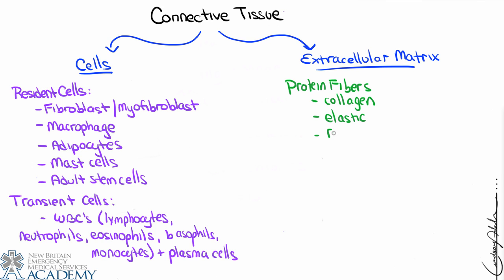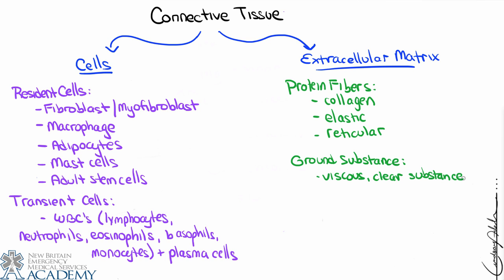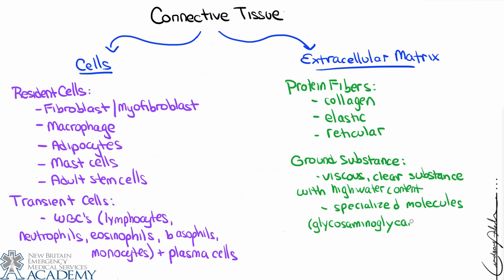The extracellular matrix is comprised of two basic things: protein fibers and ground substance. Protein fiber examples include collagen, elastic, and reticular fibers. Collagen provides strength and holds things together, while elastic fibers provide stretch — so they almost oppose each other. Ground substance is a viscous, clear substance with high water content and specialized molecules, mostly glycosaminoglycans — sugar-containing molecules that attract water, making it essentially a hydrated gel with a lot of negative charge. The ratio of cells to protein fibers to ground substance varies depending on the specific type of connective tissue.